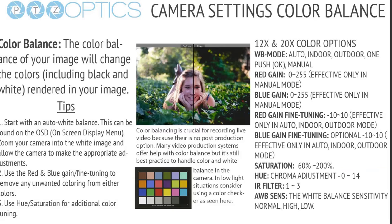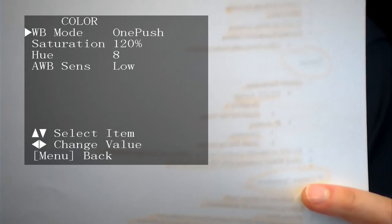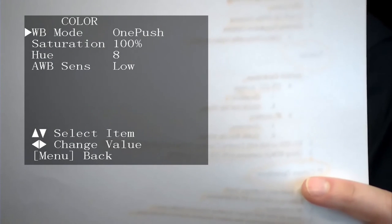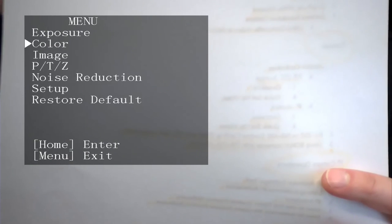Color balance is extremely important when shooting live video — if it's not right it goes out to the world live. Color balance will change how colors including black and white are rendered in your image. Start with an auto white balance from the on-screen display menu. To do it, hold up a white sheet of paper, go into the color menu, and hit 'calculate' for a one-push auto setting. I noticed my saturation was too high — someone had messed with the color settings in my camera.